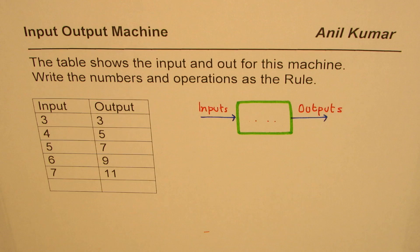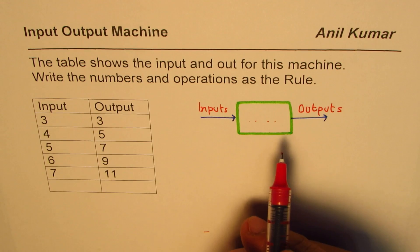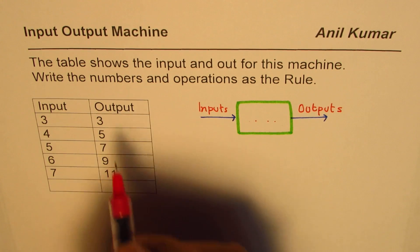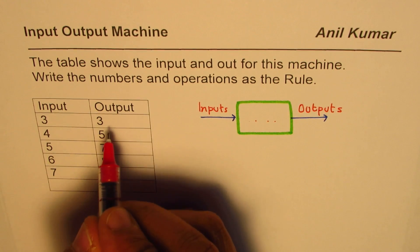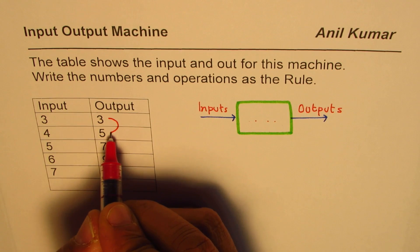So let's figure that out. The best way to find is: the numbers are increasing by 1, let us find how the output is increasing. So output moves from 3 to 5, so it increases by 2.